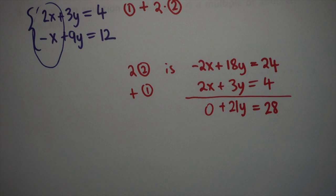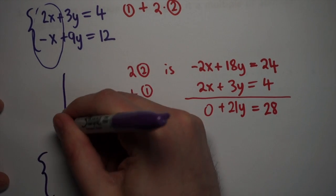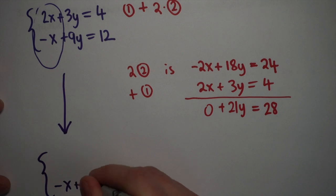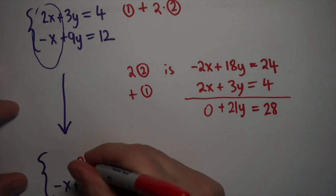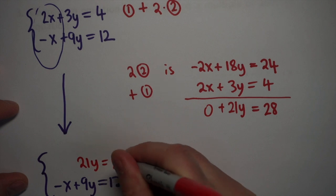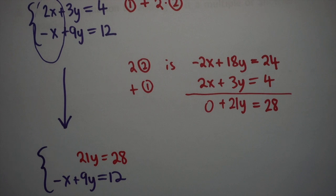Now I'm going to replace equation one by what I came up with when I added these two things together. Equation two stays the same. I haven't touched it. So negative x plus 9y is equal to 12. The benefit of doing it this way, and using a temporary multiplication, is that it doesn't change my other equations. So my first equation becomes 21y is equal to 28, and from here you could solve this equation quite easily.